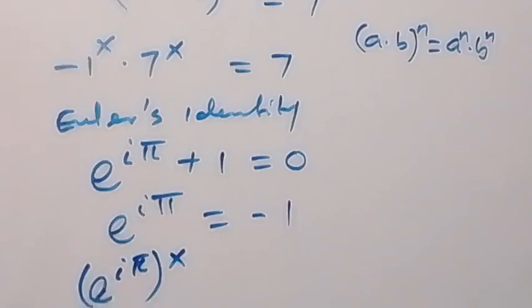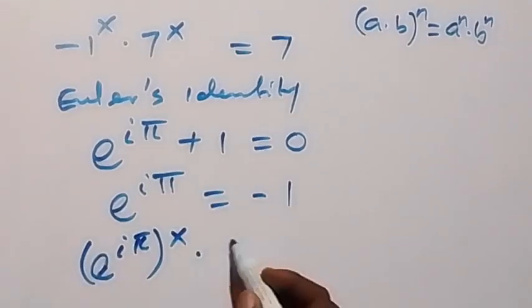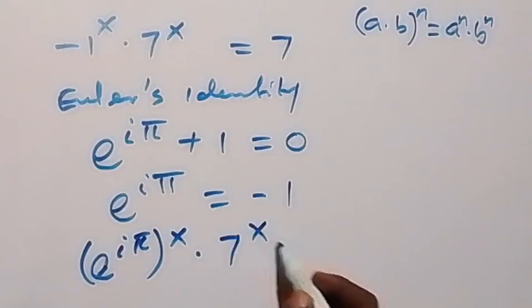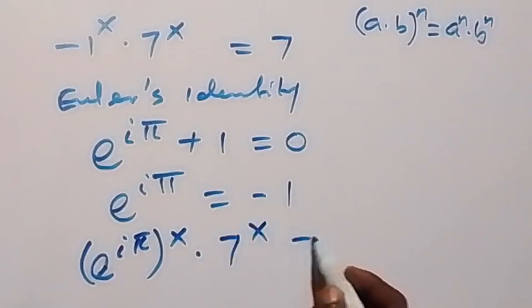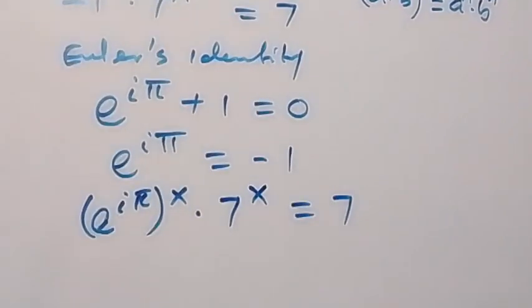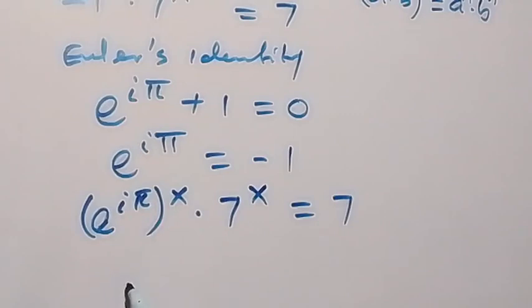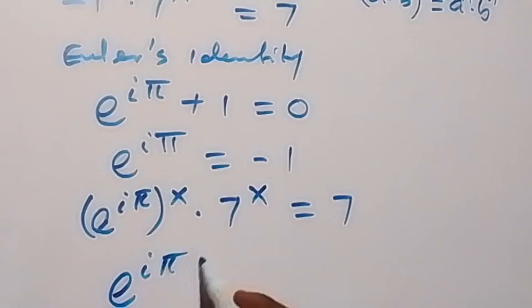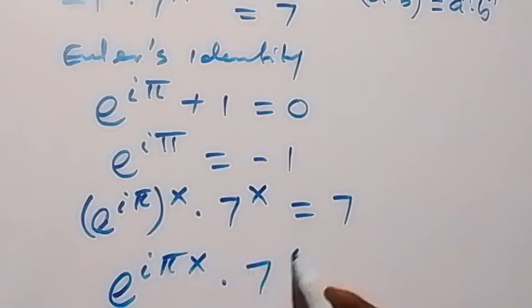Because we have e^(iπ) raised to power x, the power multiplies to give e^(iπx). Then times 7 raised to power x equals 7.